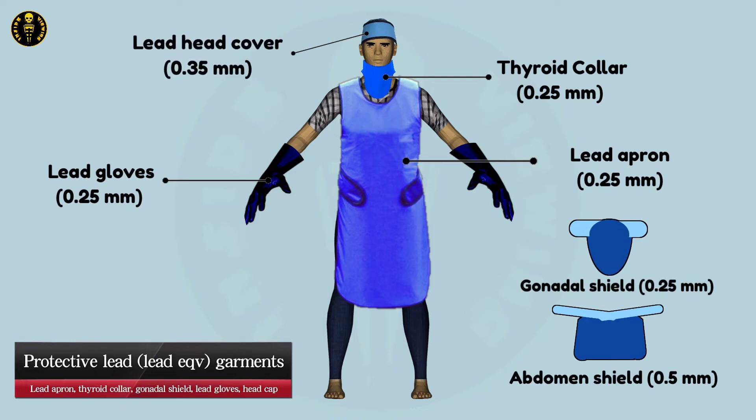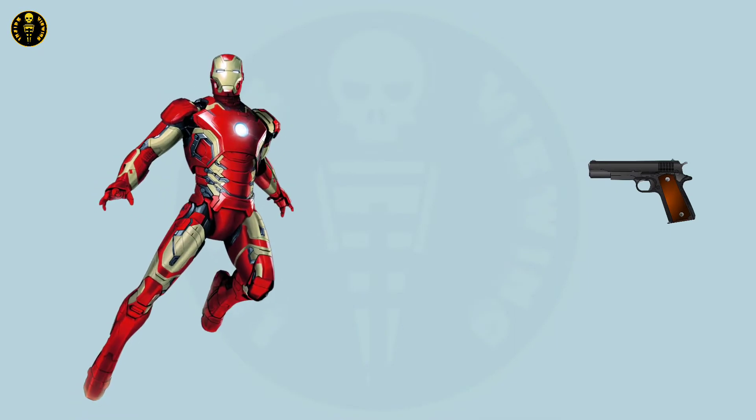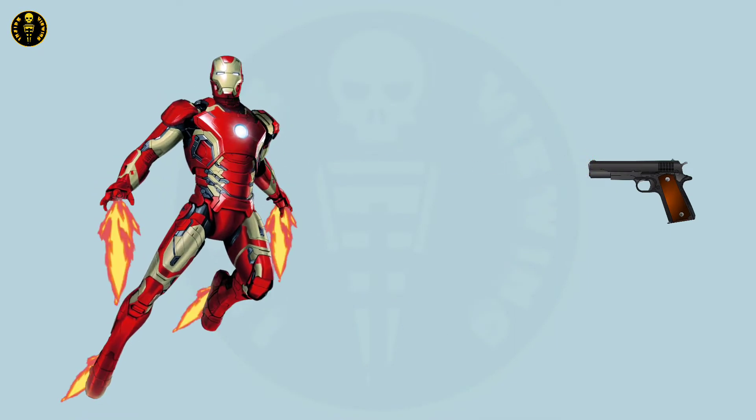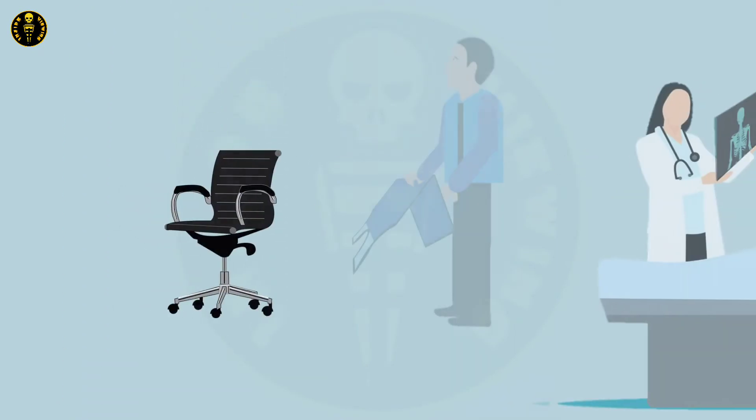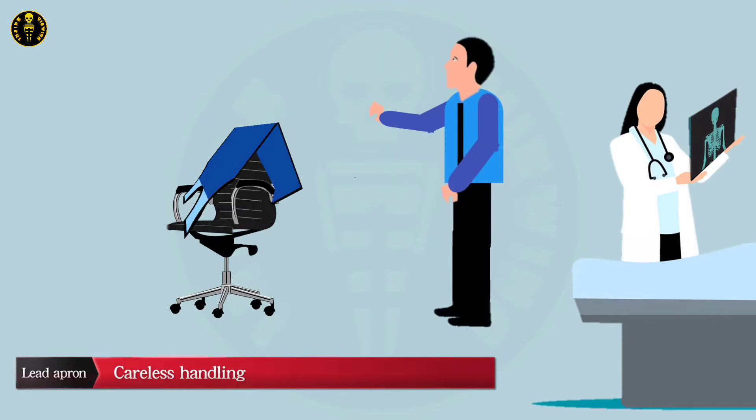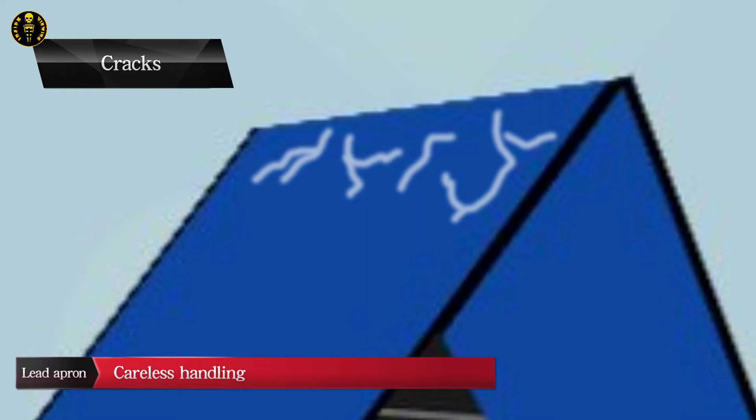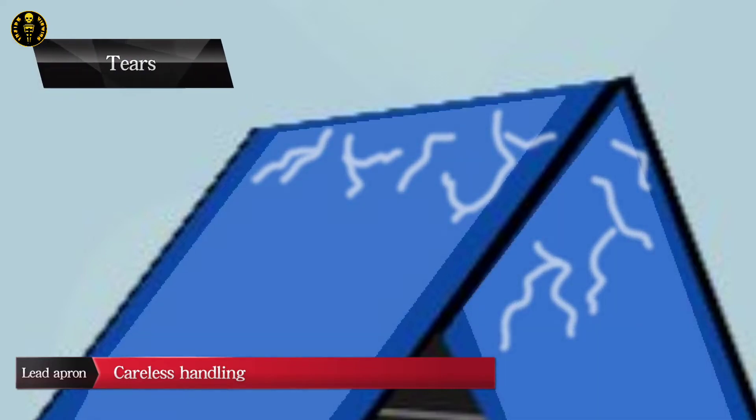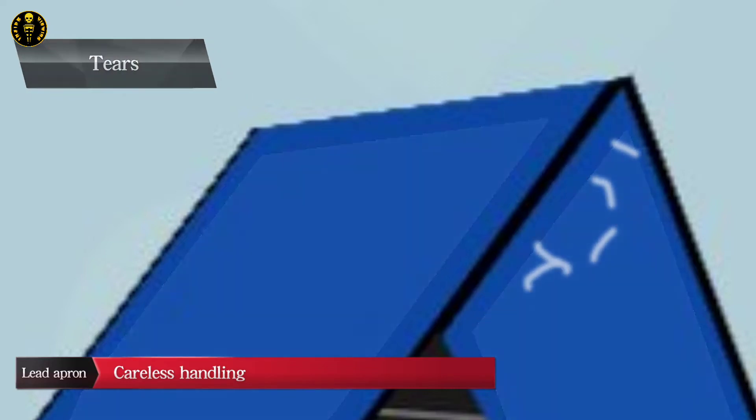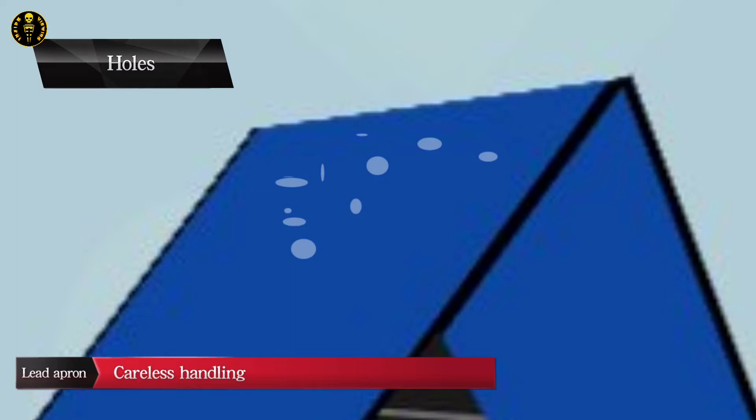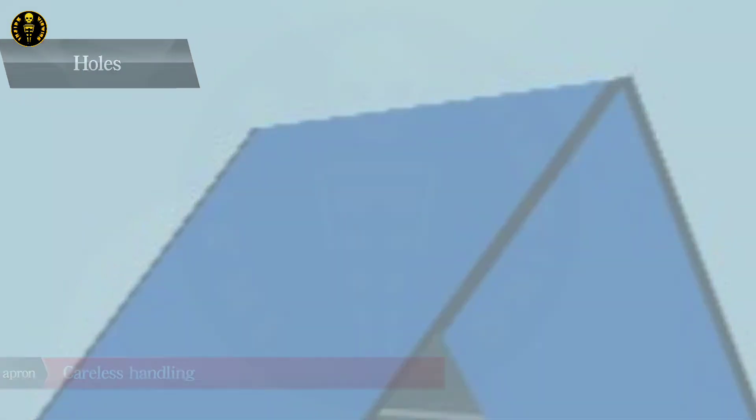Trust me, after wearing all this radiation protection clothing, it feels like a superhero with a special suit. But careless handling or improper storage can develop cracks, tears, or holes in the lead lining of the apron or other protective garments.